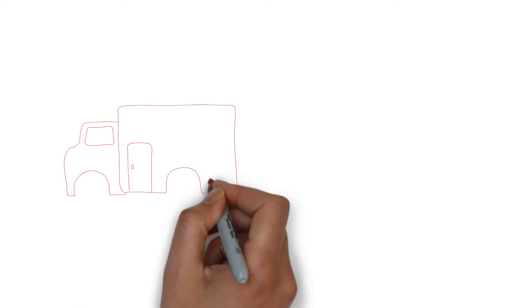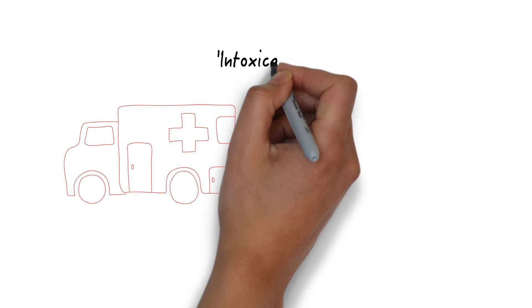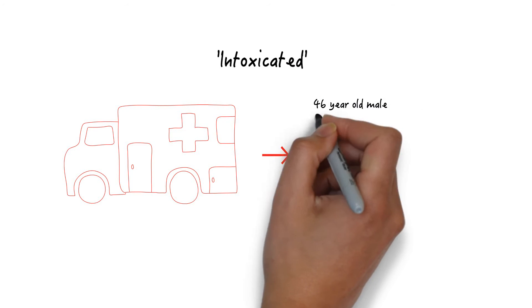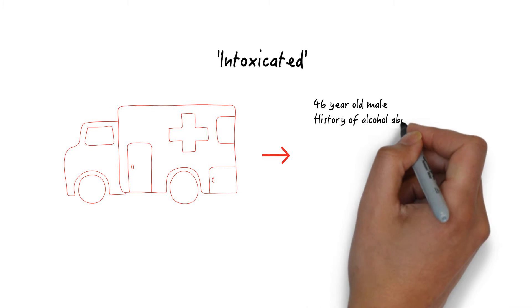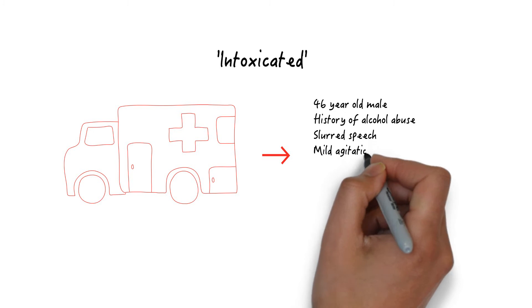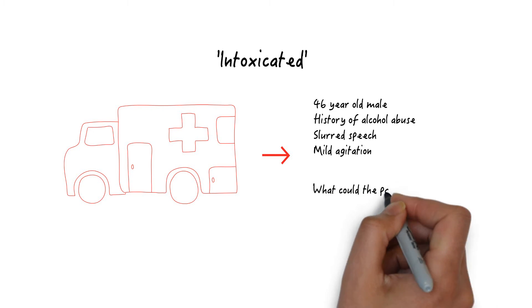You're working an ED shift when EMS arrives with a patient who they describe as intoxicated. You recognize him as a 46-year-old male who presents frequently to the ED with alcohol intoxication. His worried-looking wife reports he has had slurred speech and mild agitation. She says she removed all alcohol from the house after he decided to get sober. The patient does appear intoxicated, but there is no smell of alcoholic beverage on his breath, and he has a small bluish stain on his shirt. What could the patient have ingested?